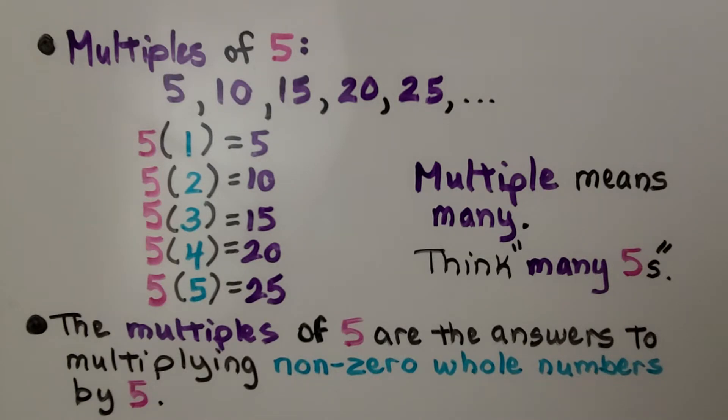Multiple means many, so think many 5s. If I said I had multiple hobbies, that means I have many hobbies. So multiples of 5 would be many 5s.